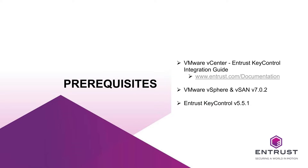During this demo, I'm going to go over how to create a KMIP tenant in Key Control. Starting with Key Control 5.5, multi-tenancy is supported, so to be able to create a client certificate to be used during the integration, we have to create a tenant in Key Control. Once we create the tenant, I'm going to go over creating a certificate so it can be used during the integration to establish trust between the KMS and vCenter.